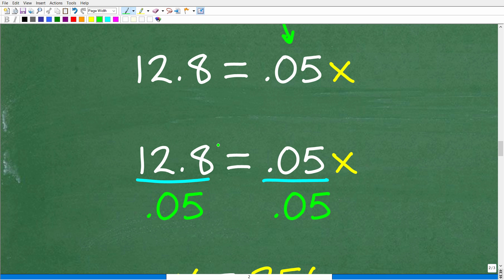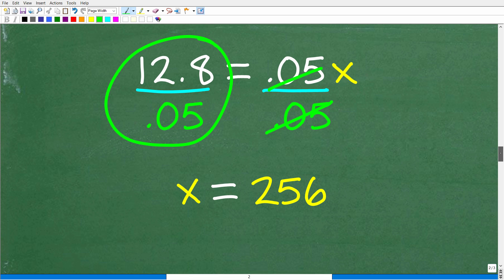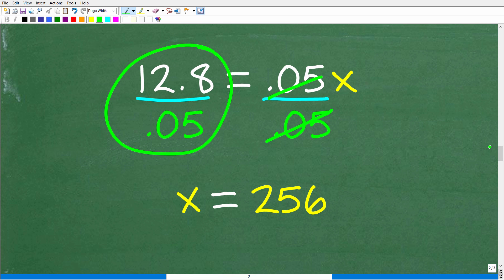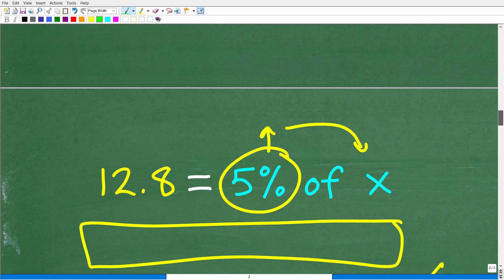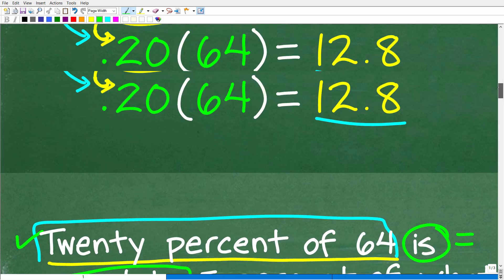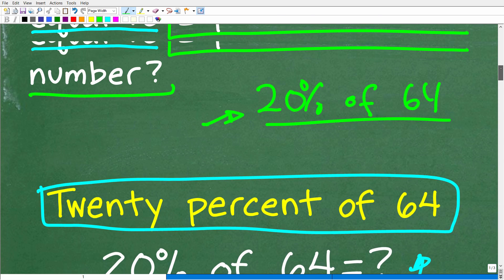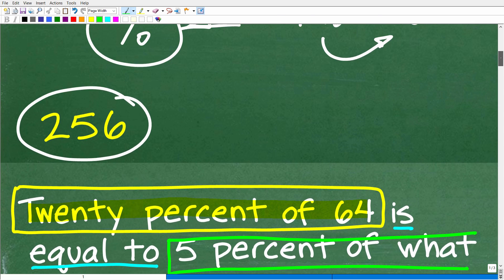Let's go ahead and calculate 12.8 divided by 0.05 because 0.05 divided by 0.05 is 1X or X. When we do that, 12.8 divided by 0.05 is going to be 256, which of course is our answer. A lot of you may have been able to solve this problem without algebra, but why avoid algebra? Algebra is a tool.